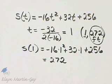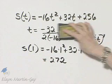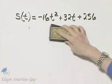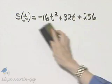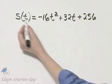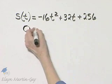Now let's find the time it takes the stone to hit the water. To find the time it takes the stone to hit the water, we want to know when the stone's height is 0, and the stone's height is 0 when this is 0.